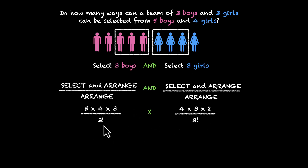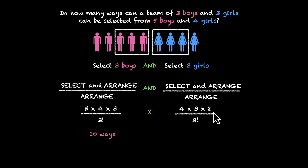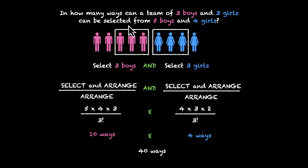Three factorial is six. Four times three is 12, so this becomes two; five times two is 10 ways for the boys. For the girls: three times two is six, six cancels out, leaving four ways. Ten times four — that's 40 ways. So the number of ways to form a team of three boys and three girls out of five boys and four girls is 40 ways.